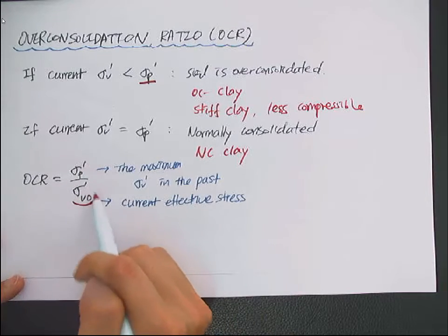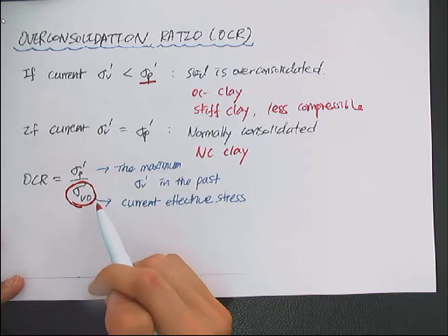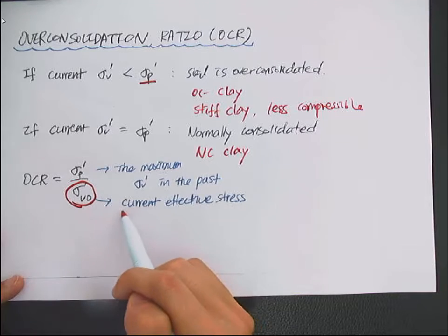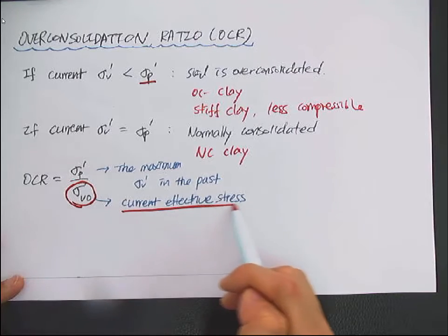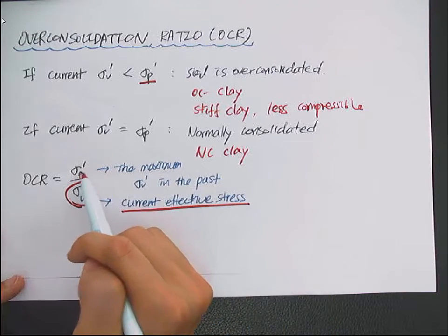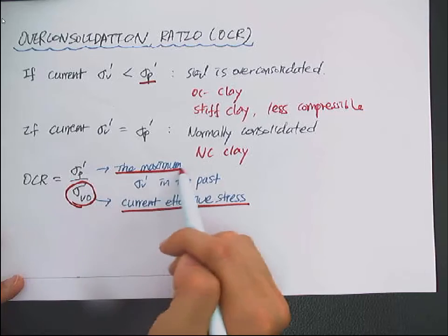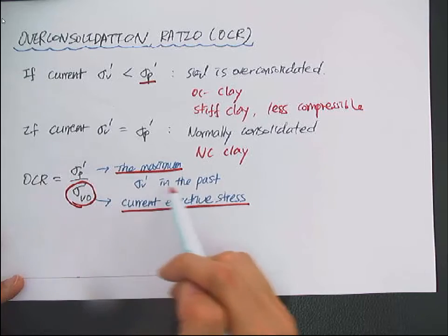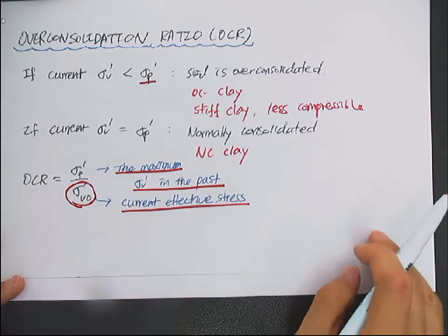Sigma V-naught prime is the current vertical effective stress, and sigma p prime is the maximum vertical effective stress in the past.